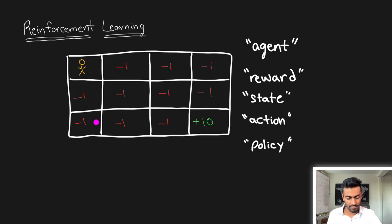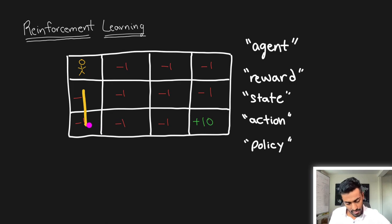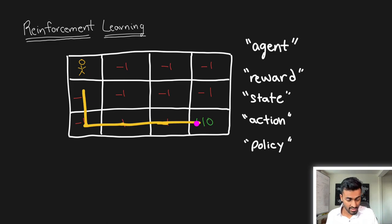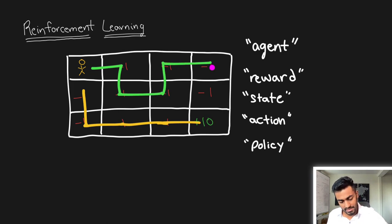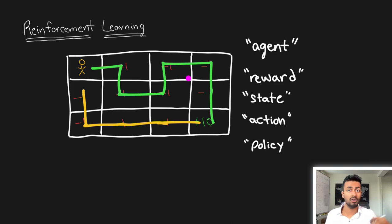One policy could be the sequence of actions: down, down, right, right, right, right, right — giving a total reward of 10 minus 1 minus 1 minus 1, which is 6. Another policy could be: right, down, right, up, right, down, down — giving a total reward of 10 minus 6, which is 4. With two policies, each with its own reward, we can tell which policy was better.